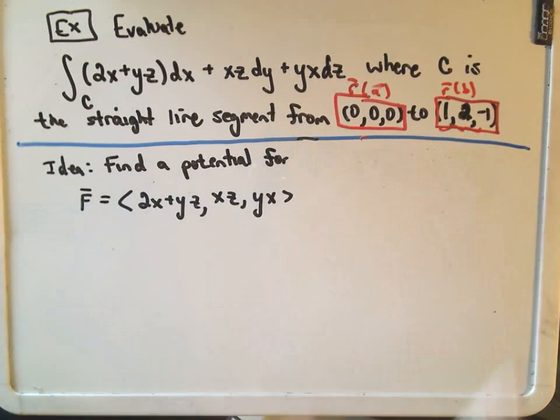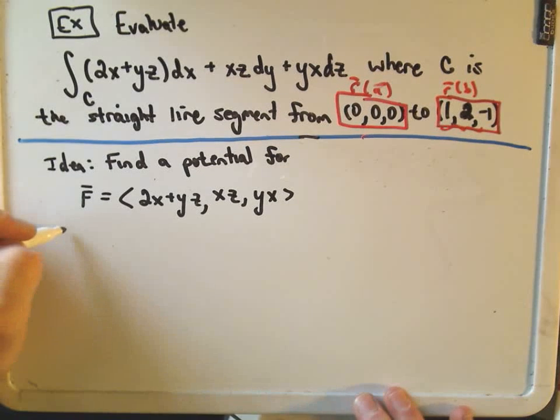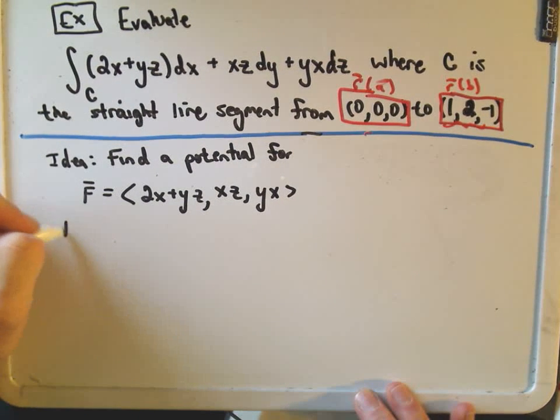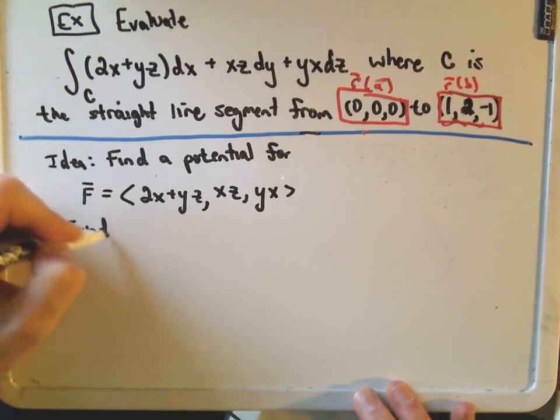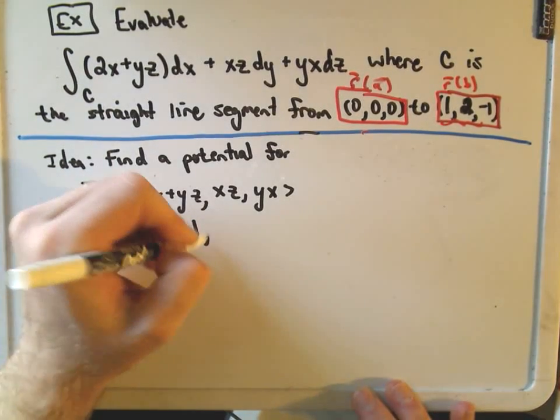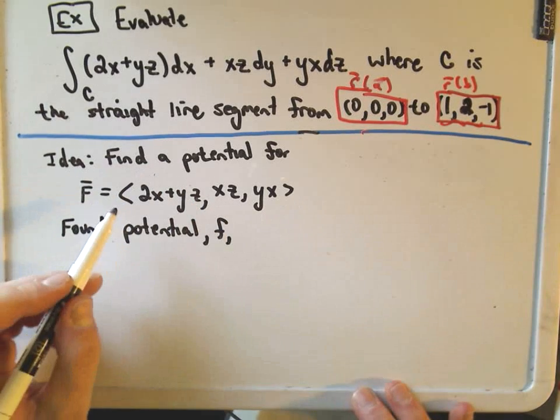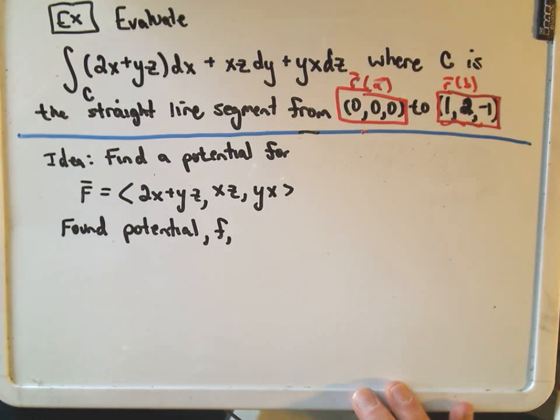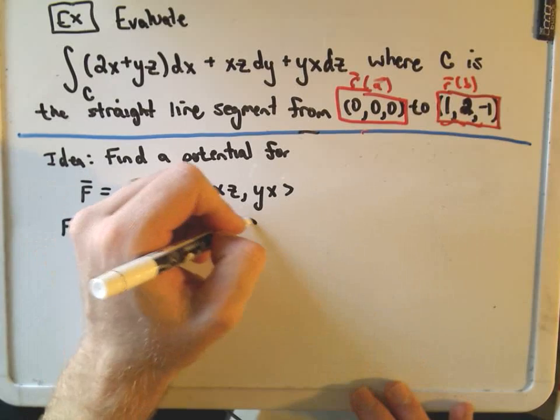Again, really it's a vector pointing at those points. We have found a potential function.